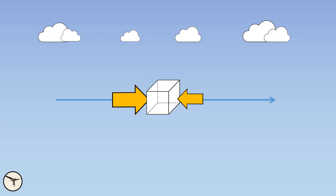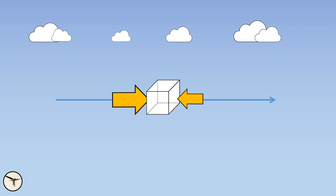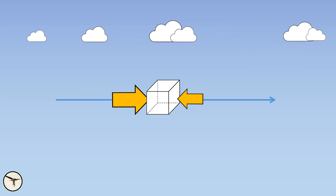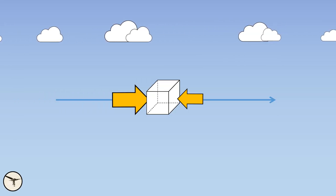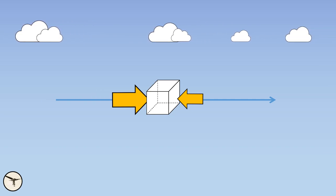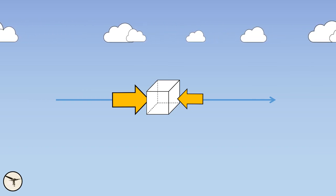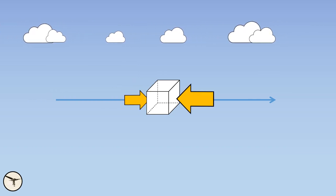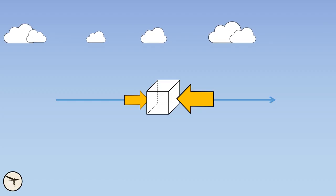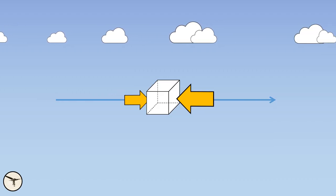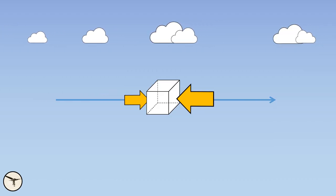For example, when the pressure behind the cube is higher than the pressure in the front, the cube will accelerate. And when the pressure behind the cube is less than the pressure in the front of the cube, it will decelerate. The larger the pressure difference, the larger the change in velocity. Are you with me so far? Good!